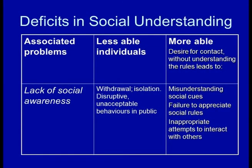Similarly, deficits in social understanding — people who lack social awareness — mean that with more intellectually impaired individuals, they may become very withdrawn from social situations because they're so difficult to cope with, or their behaviours may be disruptive or unacceptable, particularly when social demands are greater. With more able people with autism, the problem is often that they want to make contact with others, but they don't understand the social cues or social rules. So when they do try to engage, their attempts are often inappropriate, and that can lead to social isolation as well.